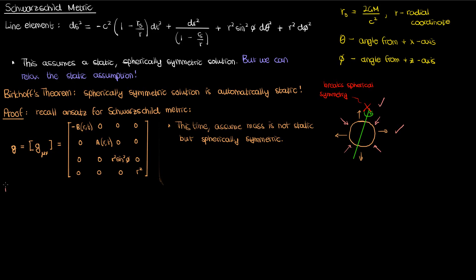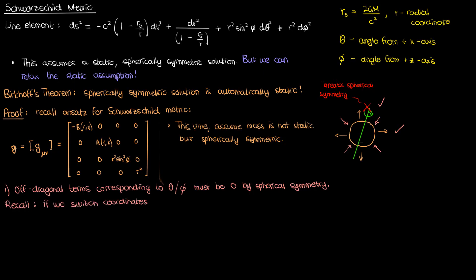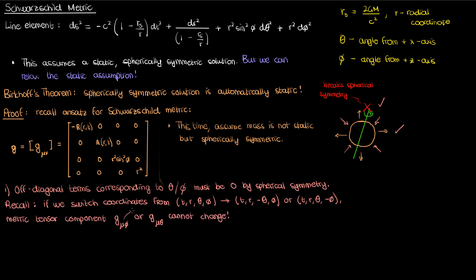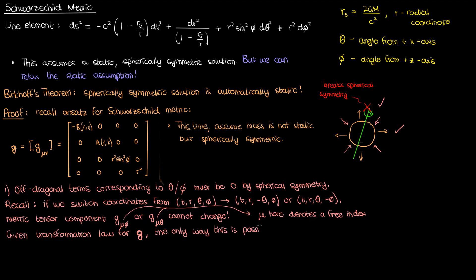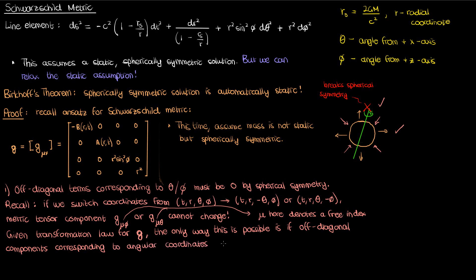There are a couple of reasons. First, if we look at any of the off-diagonal terms corresponding to the angles theta or phi, they must be zero by spherical symmetry. If we switch our coordinate system from theta to negative theta or phi to negative phi, then by spherical symmetry the corresponding metric tensor component cannot change. The only way that's possible for these angular components to remain the same under these coordinate transformations is if the off-diagonal angular components are all zero. So all those circled components of our metric tensor ansatz must still be zero even after relaxing the static assumption.